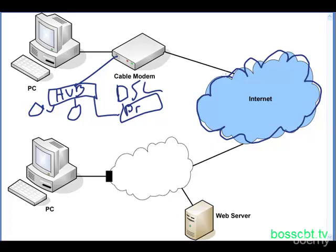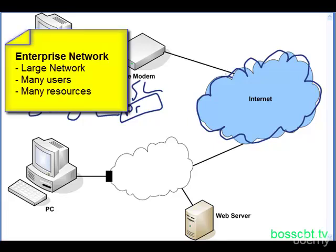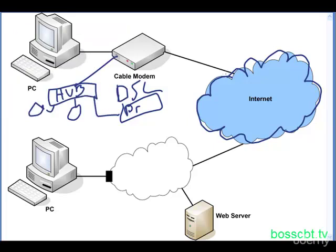Let's move on to the Enterprise Network, shown at the bottom of the diagram. The most important characteristic of the Enterprise Network is that it's a large network. In comparison to the SOHO Network, it is much, much bigger — that means it has many more users and many more resources. It also likely has a larger, more powerful, or faster Internet connection, because with a lot more users transmitting data you need bigger pipes to get that data in and out of the network.